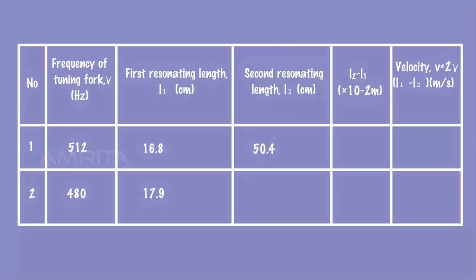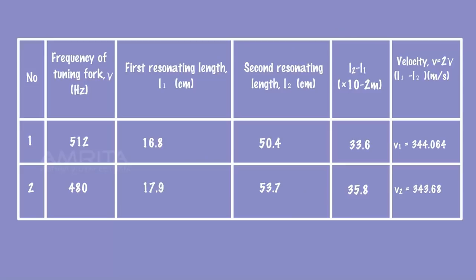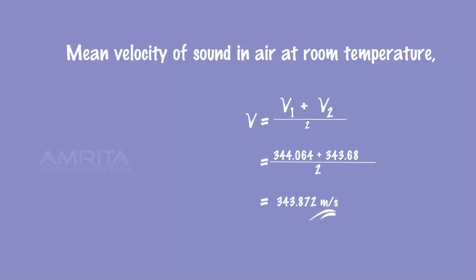Calculate L2 minus L1 in each case. Calculate the velocities V1 and V2 in both cases. Record the velocities in the tabular column. The mean value of V1 and V2 will give the velocity of sound in air at room temperature.